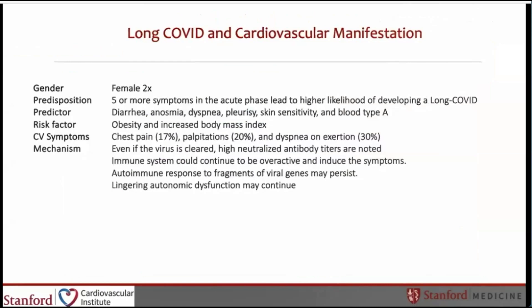Long COVID cardiovascular manifestations were seen predominantly in females — twice as many as males. Some predisposing symptoms included having five or more symptoms in the acute phase, leading to higher likelihood of developing long COVID. Predictors included diarrhea, anosmia, dyspnea, pleurisy, skin sensitivity, and blood type A. Risk factors include obesity and increased body mass index. In terms of cardiovascular symptoms, about 17% had chest pain, 20% experienced palpitations, and 30% had dyspnea on exertion.